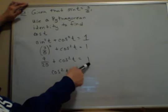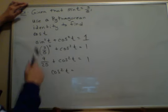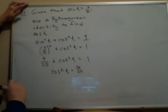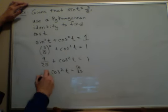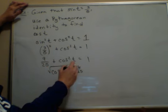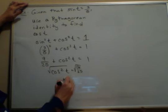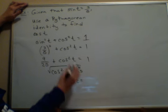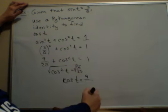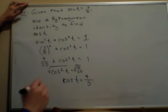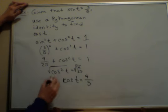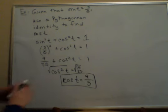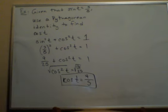I'll subtract nine-twenty-fifths from both sides. So, I'll have 25-twenty-fifths minus nine-twenty-fifths, which is 16-twenty-fifths. And then the last thing I'll do is square root both sides. So, we find out that the cosine of t is the square root of 16, or 4, over the square root of 25, which is 5. So, we've used that Pythagorean identity to help us find the value of cosine. Okay?